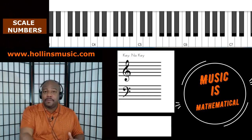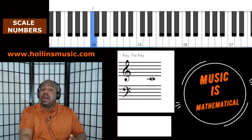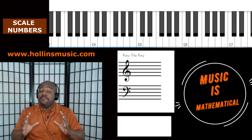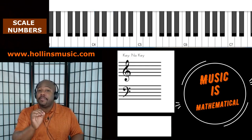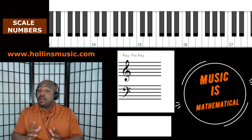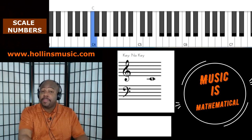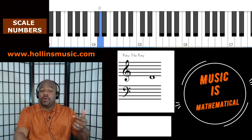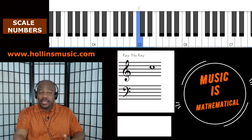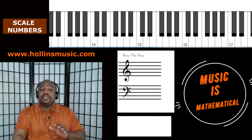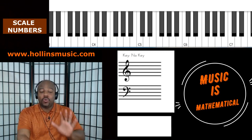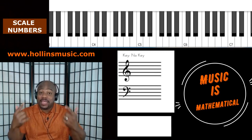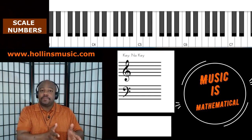Let's take the C major scale, which most of us already know: C, D, E, F, G, A, B, and C. Each note of the major scale has a number called a scale degree. The first note is number one, then two, three, four, five, six, seven, eight. And as we come back down: eight, seven, six, five, four, three, two, one. This is what I mean when I say music is mathematical.